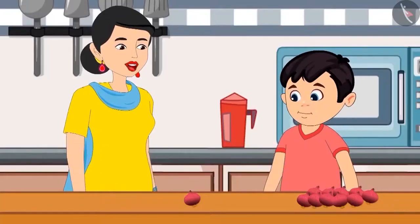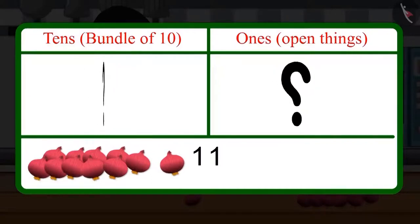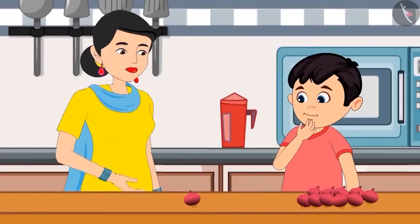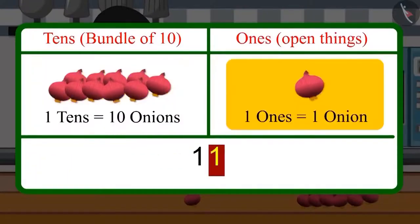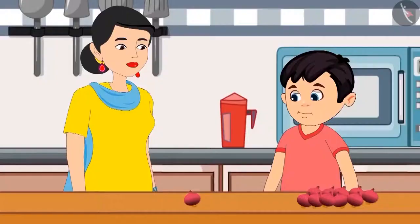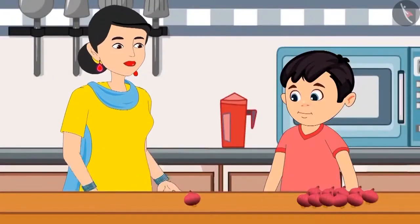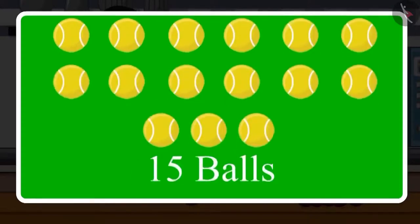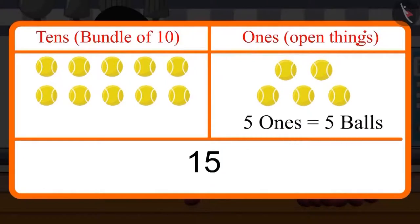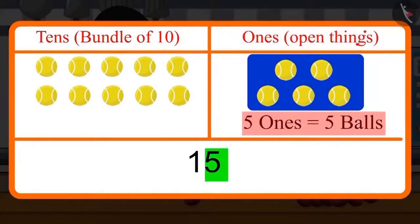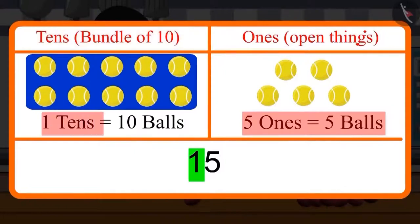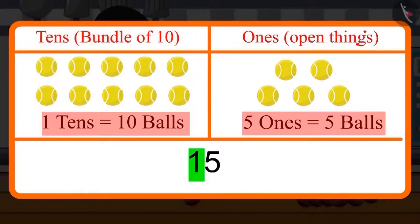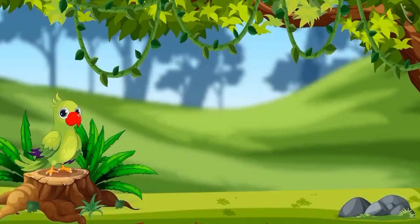Have you understood? Yes, Mommy. So now can you tell me how many 10s and 1s are there in 11 onions? There would be 1 ten and 1 one in 11 onions, isn't it, Mommy? Yes, Choto. You are absolutely right. So, children, do you know that when we write numbers in 1s and 10s, we call them the place value of the numbers? For example, if I have 15 balls, then the place value of 5 is 5 ones, which means 5 balls, and the place value of 1 is ten, which means 10 balls. So the total is 15 balls.